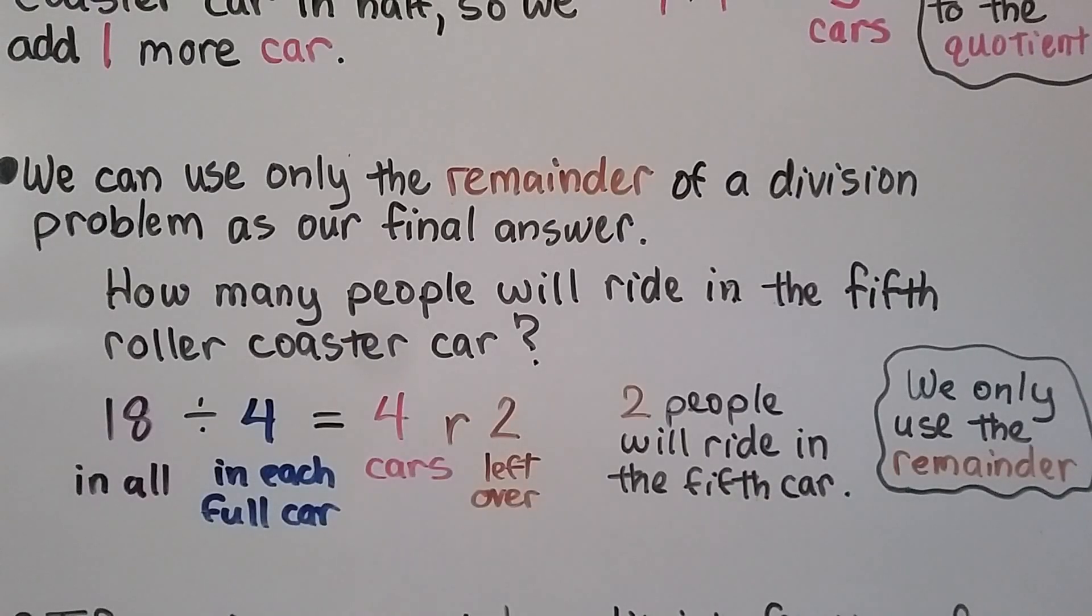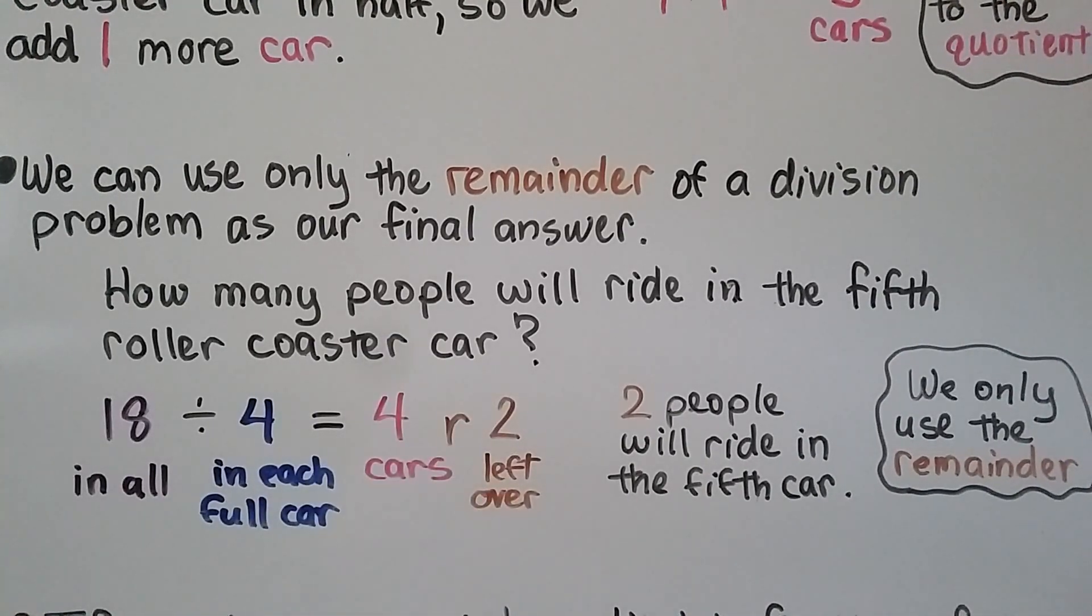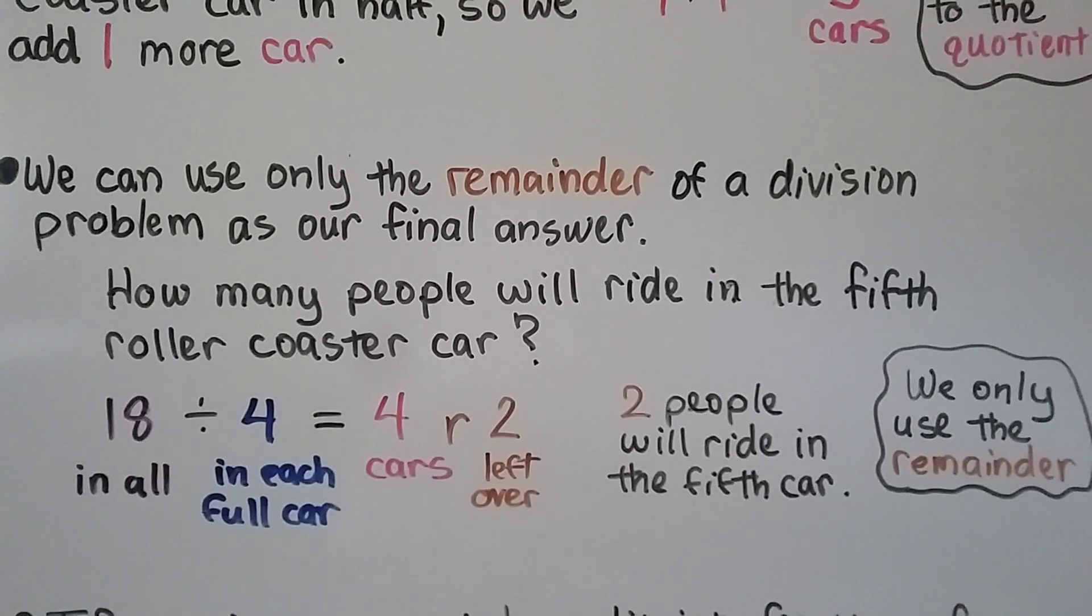We can use only the remainder of a division problem as our final answer. How many people will ride in the 5th roller coaster car? We had 18 people in all. There were 4 in each full car, which made 4 cars with 2 left over. So the answer to this one, this question, is just the remainder. There's 2 left over, so 2 people will ride in the 5th car. We only used the remainder for this problem.